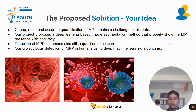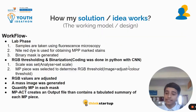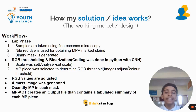Detection of MPP in humans is still a question of concern. Our project proposes detection of MPP in humans using deep machine learning algorithms. The workflow of the proposed system is: first, the lab phase — samples are taken using fluorescence microscopy and MPP stains are marked using Nile Red dye. RGB thresholding and annotation coding are then done in Python with CNN.